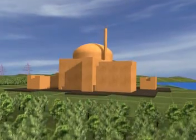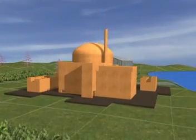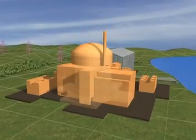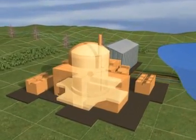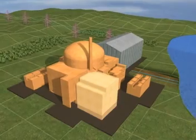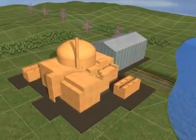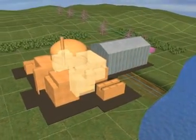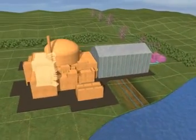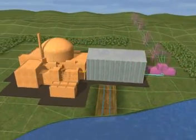A pressurized water reactor power plant comprises a nuclear island with buildings that house specific equipment: the reactor, nuclear auxiliaries, safeguard systems, fuel, and diesel generators.